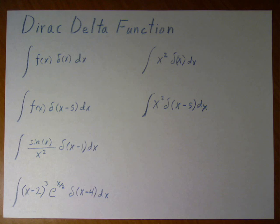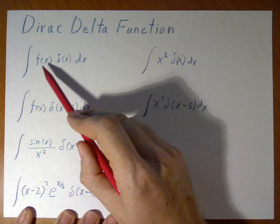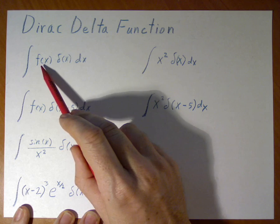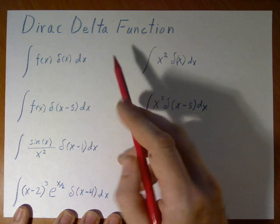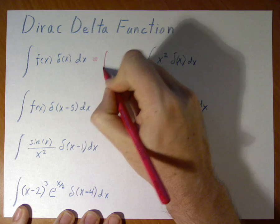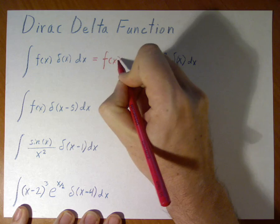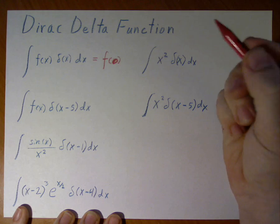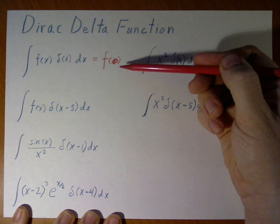To begin with, we're going to look at the Dirac delta function with an integral with a function f of x. In this case, we simply evaluate the integral as being f of x at 0. The entire integral equals this, nothing else.